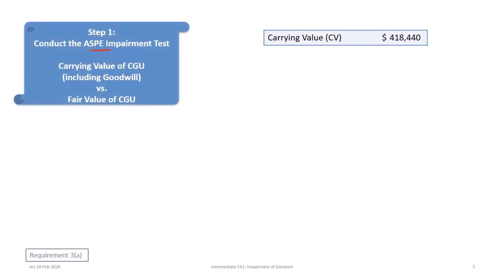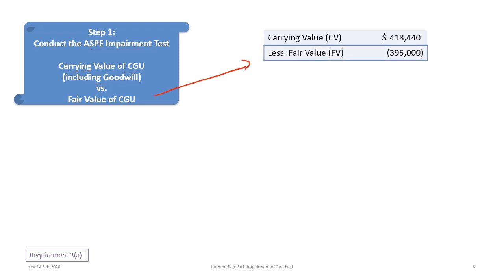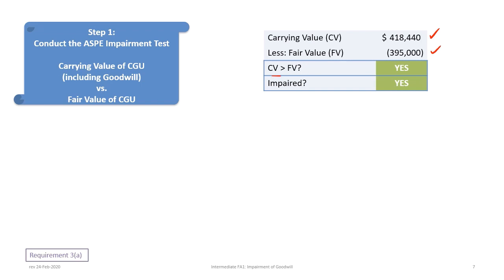The first step is conducting an ASPE impairment test by comparing the carrying value of the CGU including goodwill versus the fair value. The carrying value is $418,440. Under ASPE, we exclude the cost of disposal or cost to sell — those are included only for testing impairment under IFRS. The fair value is $395,000. Since the carrying value of $418,440 is greater than the fair value of $395,000, goodwill is impaired because it is being carried for more than its fair value.